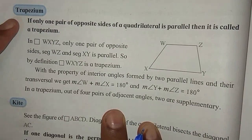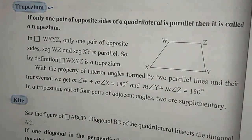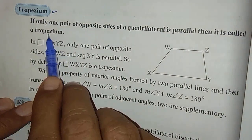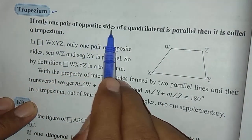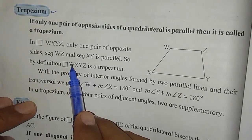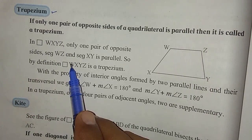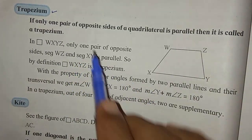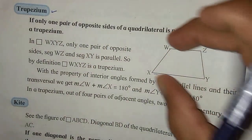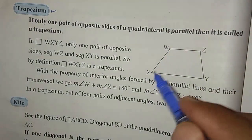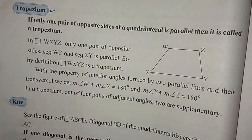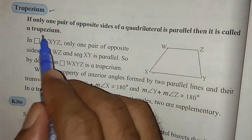Now let us move to the next type of quadrilateral, whose name is trapezium. Which figure is called a trapezium? If only one pair of opposite sides of a quadrilateral is parallel, then it is called a trapezium. In a parallelogram, both pairs of opposite sides were parallel. But in a trapezium, only one pair of opposite sides is parallel. In the figure, WZ and XY are parallel to each other, but YZ and XW are not parallel to each other. Such a quadrilateral is called a trapezium.